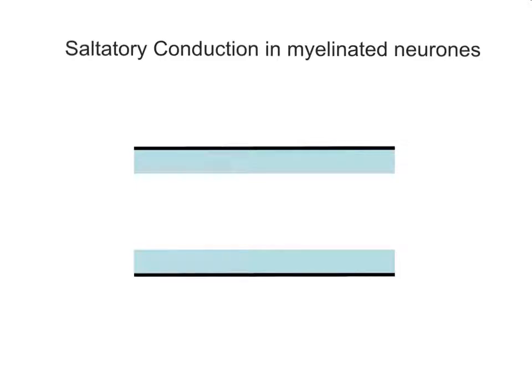Now, neurons are specialized nerve cells, and myelinated refers to those that have this protective sheath of lipid around them called myelin, known as the myelin sheath.